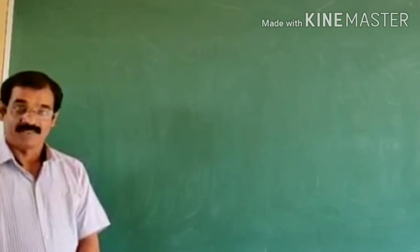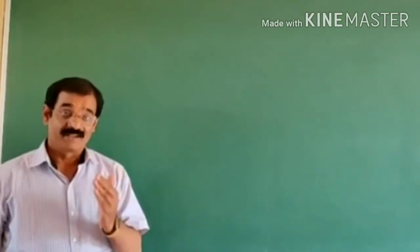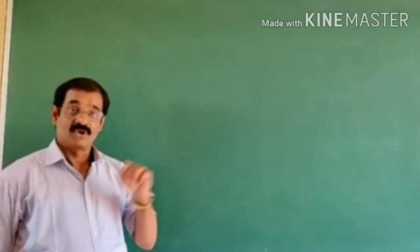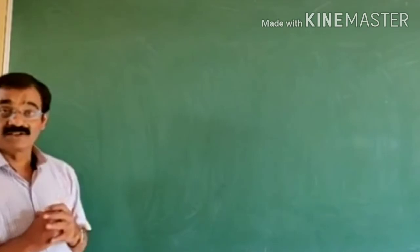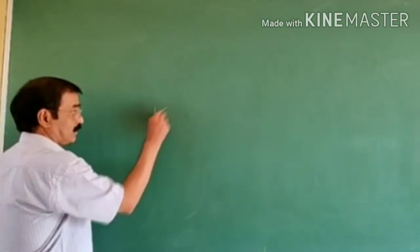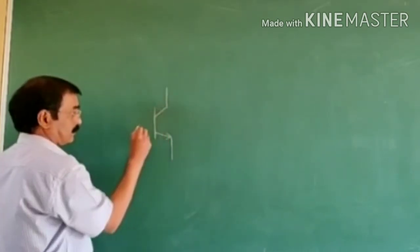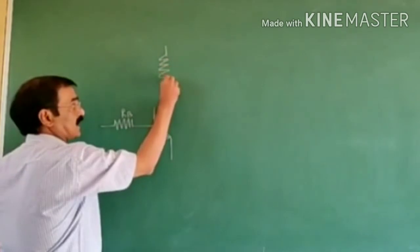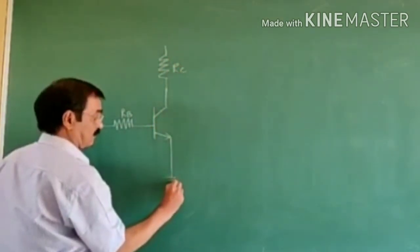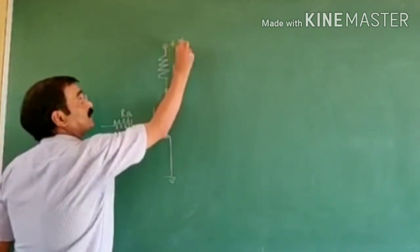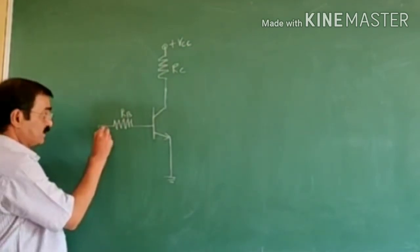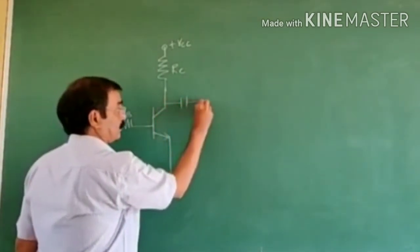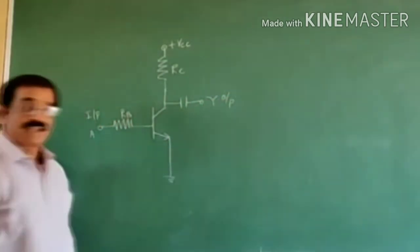Now we will start the NOT gate. What is the NOT gate? The logic gate whose output is high when the input is not high (i.e., low) is called as the NOT gate. We can build the NOT gate using a transistor. Suppose this is an NPN transistor — this is the base resistor RB, collector resistor RC, and ground. Here the supply voltage plus VCC is connected and after the base there is input A. Take the output from the collector Y. This is the diagram of the NOT gate using a transistor.